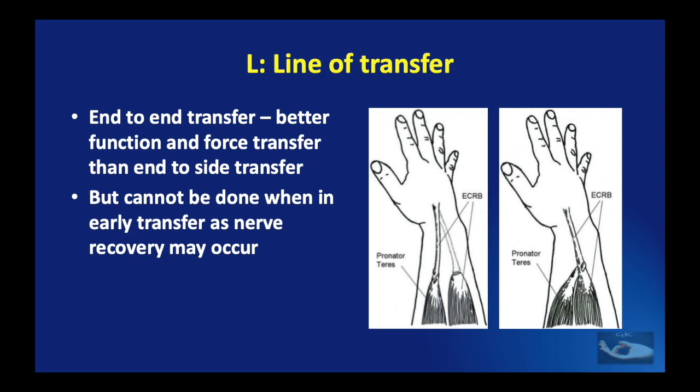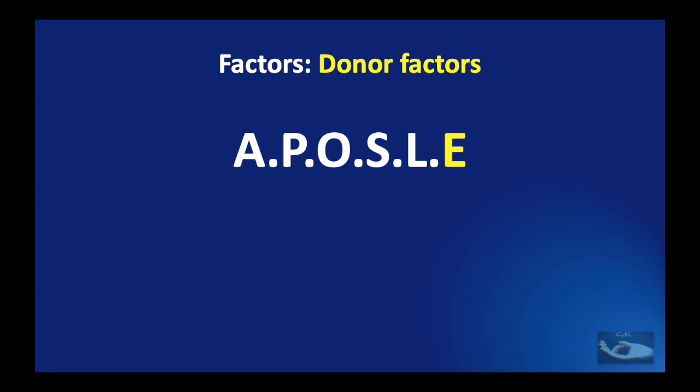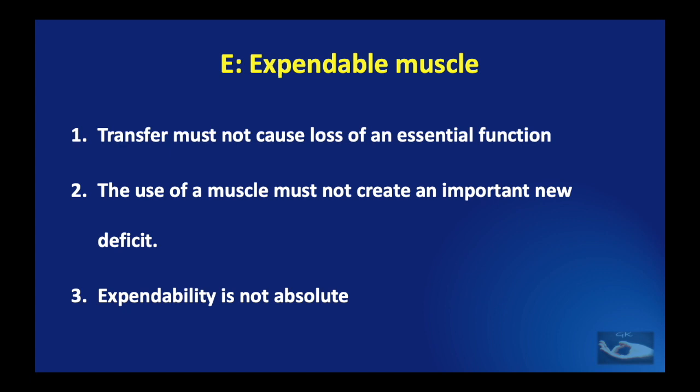That brings us to the last letter of the mnemonic APOSTLE — E, which stands for expendability. This means that the tendon transferred must be of an expendable muscle. There are three important points: the transfer must not cause loss of an essential function; the use of a muscle must not create an important new deficit; and expendability is not absolute.